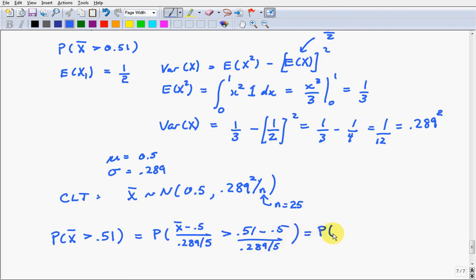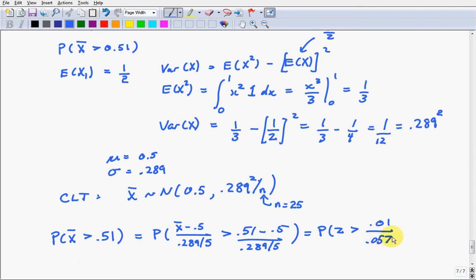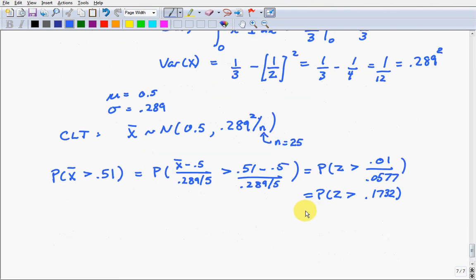That's the same as saying the probability that a standard normal is bigger than 0.01 over 0.0577. Or the same as the probability that a standard normal is bigger than 0.1732. Which we can look up in R. We can say that that's 1 minus the probability that z is less than 0.1732. Which equals 1 minus p norm of 0.1732. Which works out to be about 43%. So, there's a 43% chance that you'll be ahead of the game after playing this game that many times.